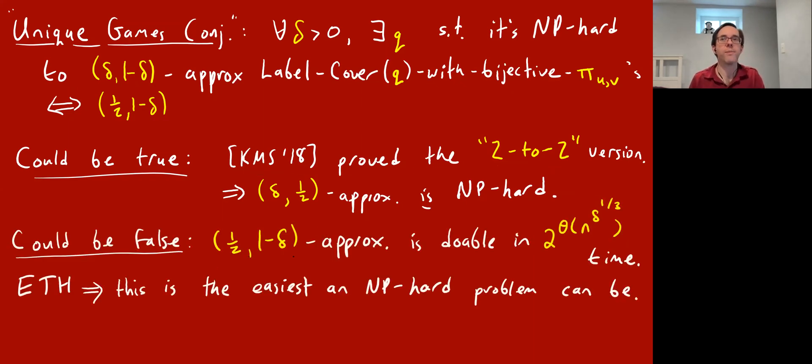On the other hand, maybe the UGC is false. In 2010, it was shown by Arora et al that you can solve the task of getting half the constraints correct on a 1-δ satisfiable instance in time that's like 2^(n^(δ^(1/3))). It's pretty funny. But for any fixed constant δ, or for really small constant δ, this is like a really small sub-exponential quantity, like 2^(n^ε) for something tiny. So that's kind of close to being polynomial time. And as we saw before, if you assume ETH, which is less controversial, this is sort of like the easiest an NP-hard problem could be. Under ETH, you can solve NP-hard problems in time 2^(n^ε), but not better than that. So we kind of know that you can solve the unique games problem in time 2^(n^ε), but it's still possible that it's NP-hard. So we really don't know.